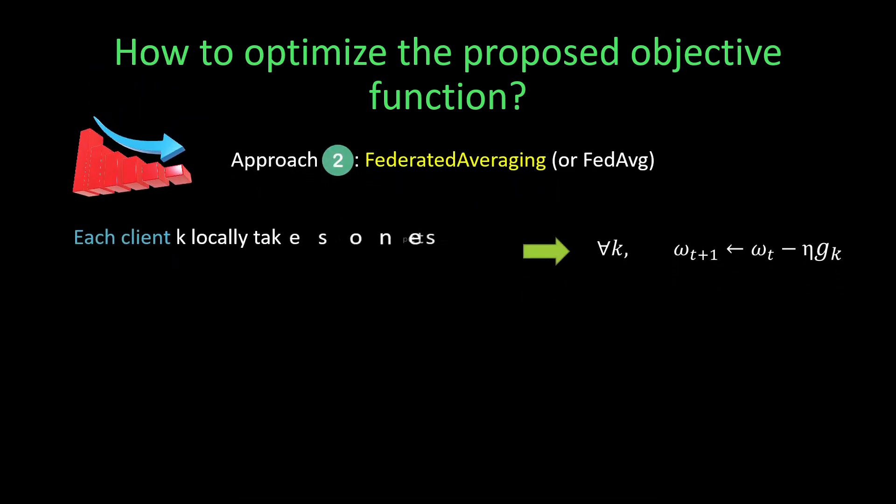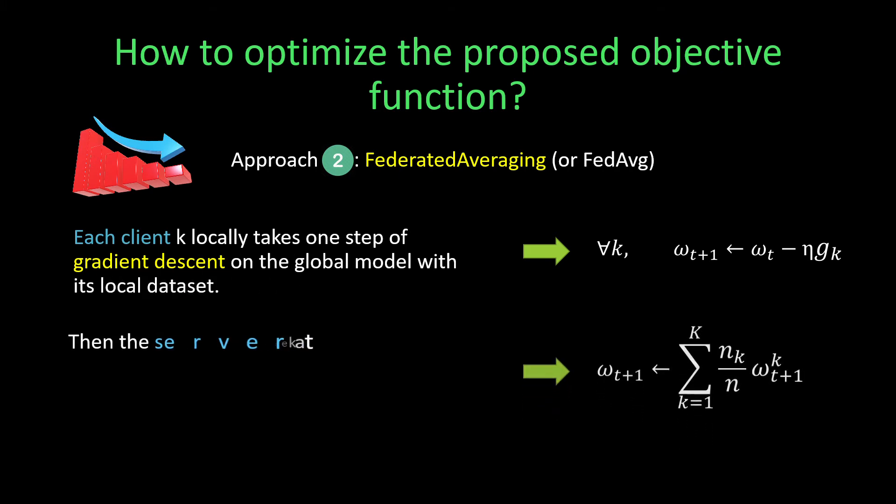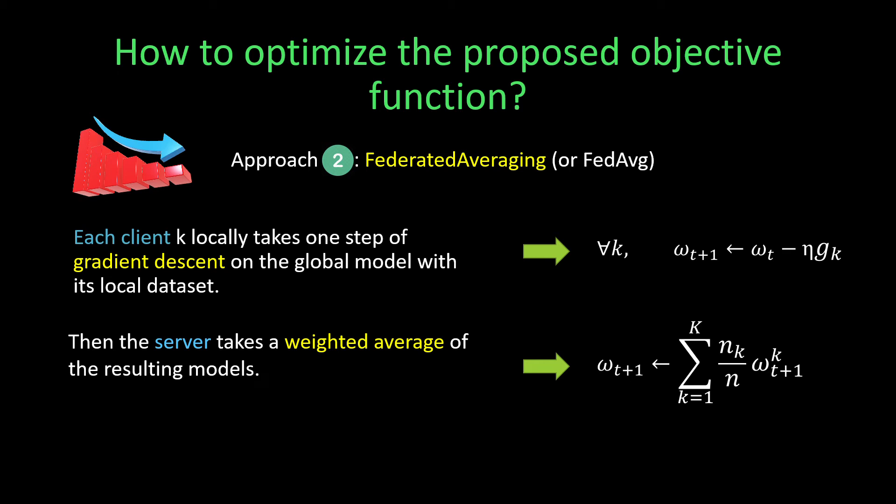In the second alternative, since local devices update the global model locally, they can keep computing gradient and updating the model for a local epoch amount of time. In this way, communication costs reduce substantially. The second approach seems more promising, allowing us some advantages. We can add more computation to each client by iterating local updates multiple times before the averaging step.